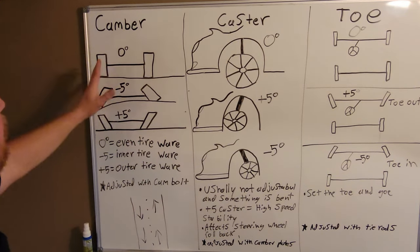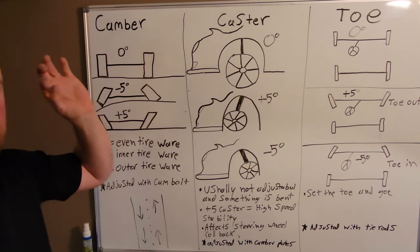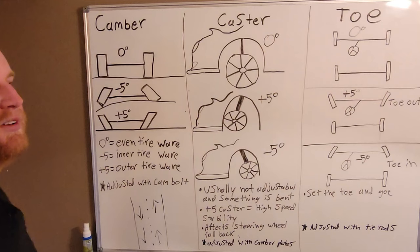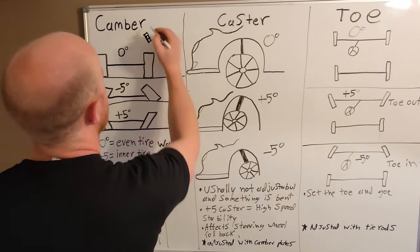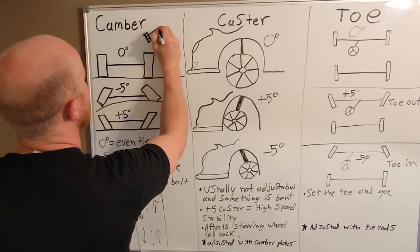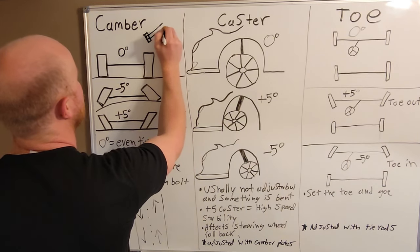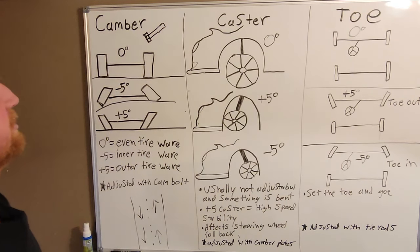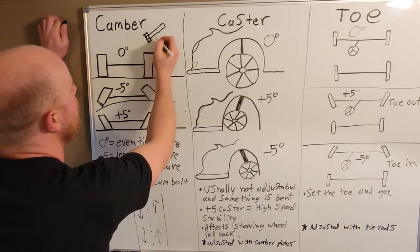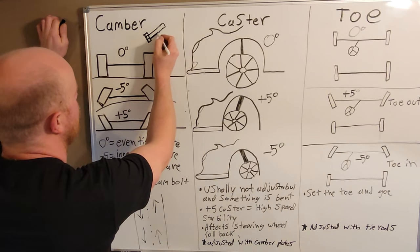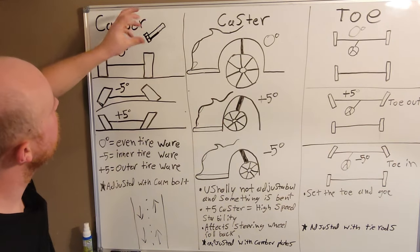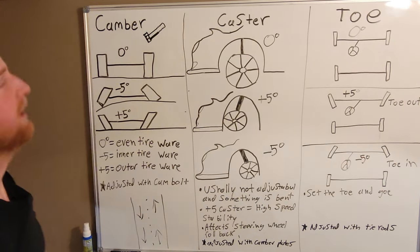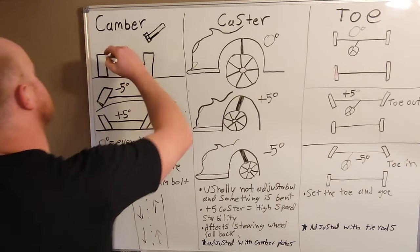The way this is adjusted, there's a cam bolt on the suspension. Instead of the bolt being perfectly round, here's your bolt head where you put your socket on to tighten it. Then half the bolt isn't threaded and the other half is threaded. You'll have two of these on your shock. One of these sides of the bolt will be longer. So as you twist it, it'll adjust the shock and provide more camber or less.